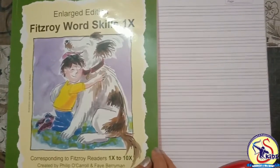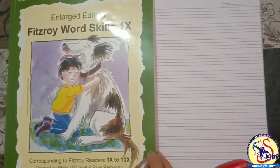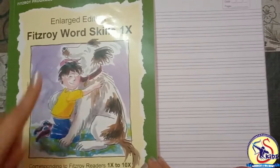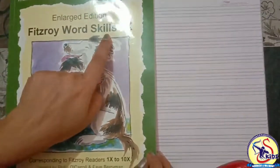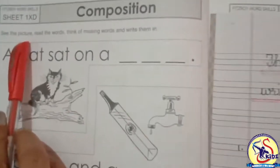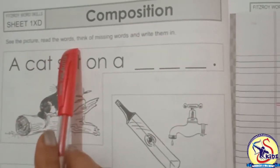Hello students, how are you all? I hope you are fine. Today we are going to do one more exercise from the book Fitzroy Word Skills. The name of the exercise is: See the picture, read the words, think of missing words and write them in.